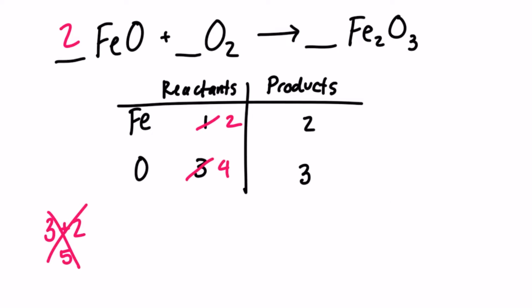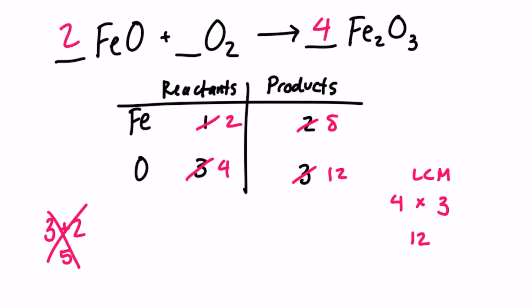So let's try the least common multiple approach. Four times three is 12. How do I get 12 oxygen in the product? If I add a four coefficient, four times three gives me 12. But that four is going to distribute to the iron as well — four times two is eight. So now my iron is out of balance. If I add an eight to the iron in the reactant, I change that. Then I have eight iron in the reactant, and it changes up the total of oxygen as well. Eight oxygen plus those two — eight plus two, that's 10. I've got 10 oxygen in the reactant, 12 in the product.